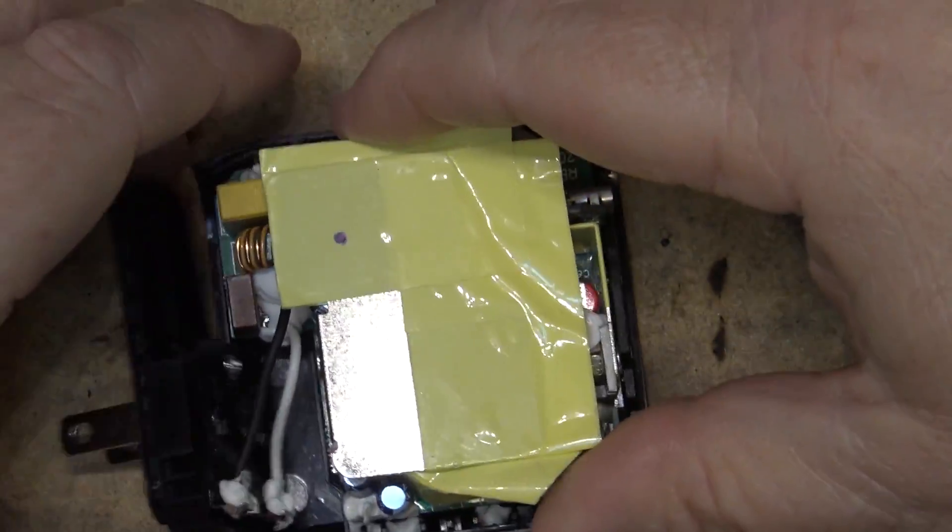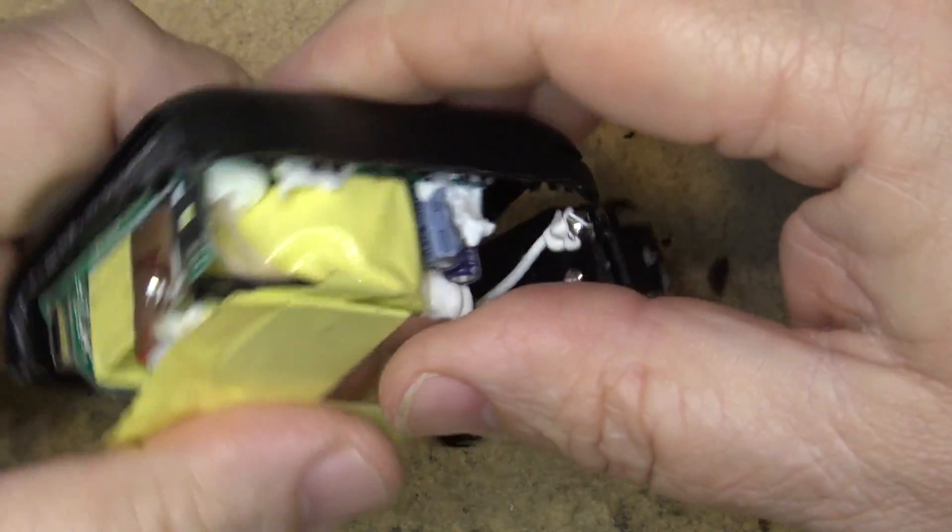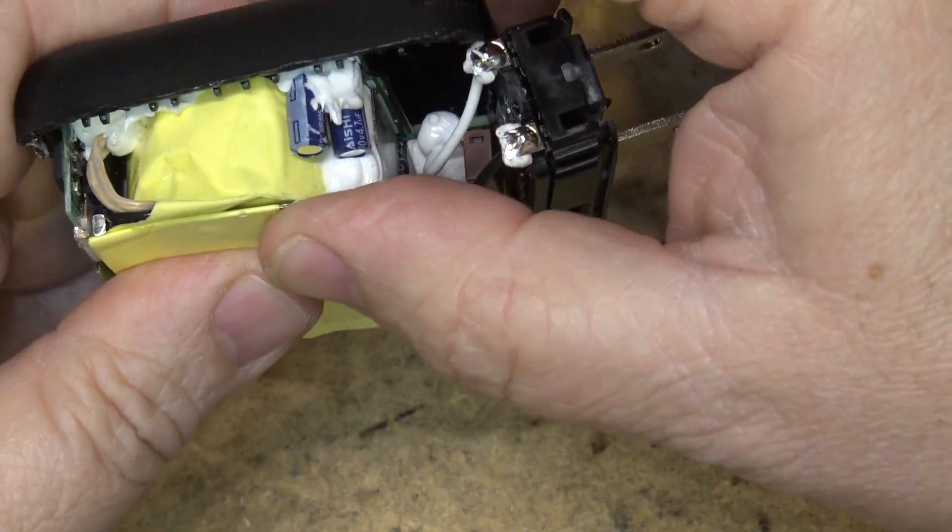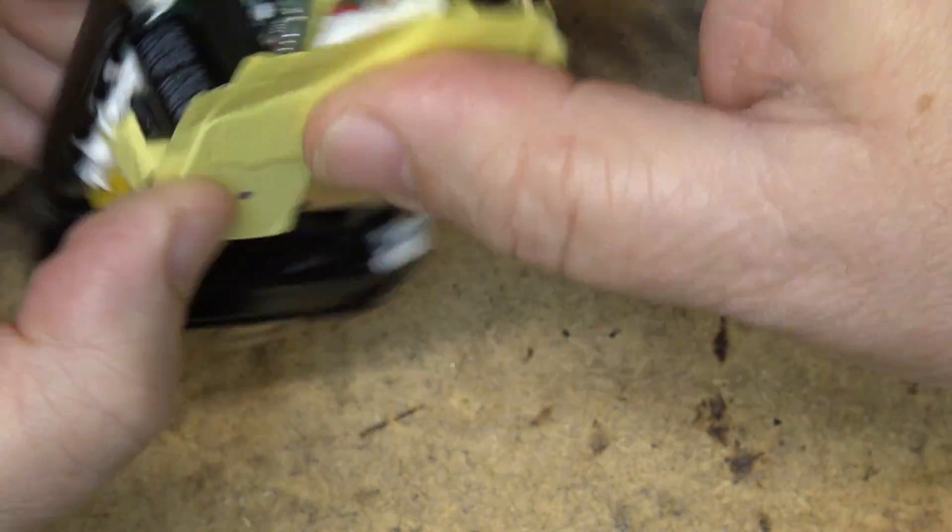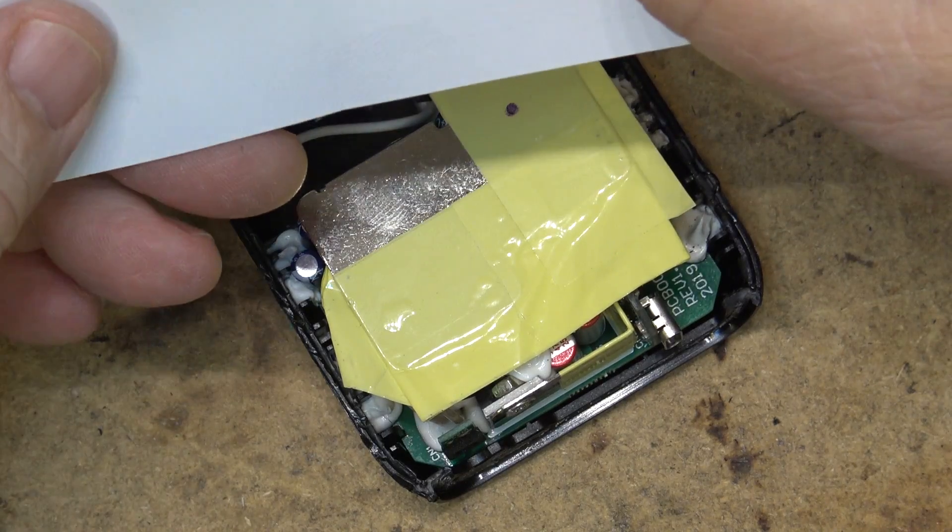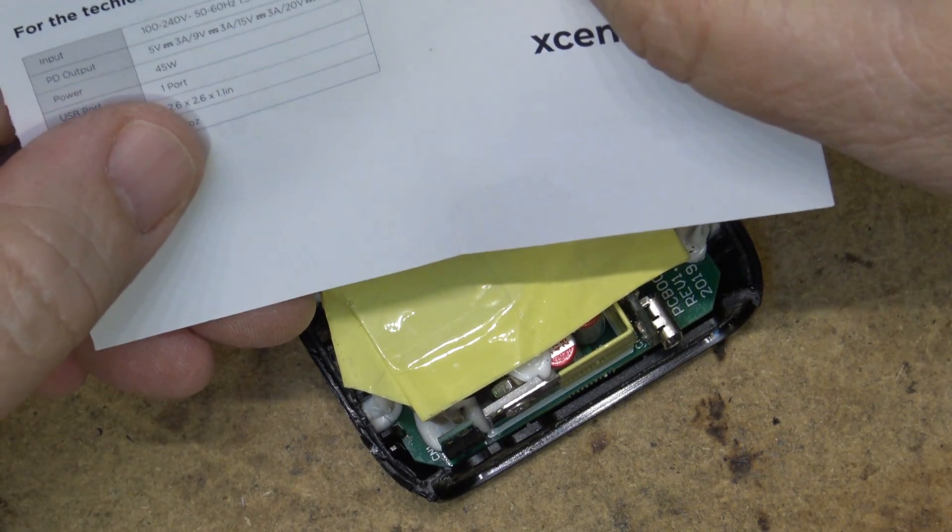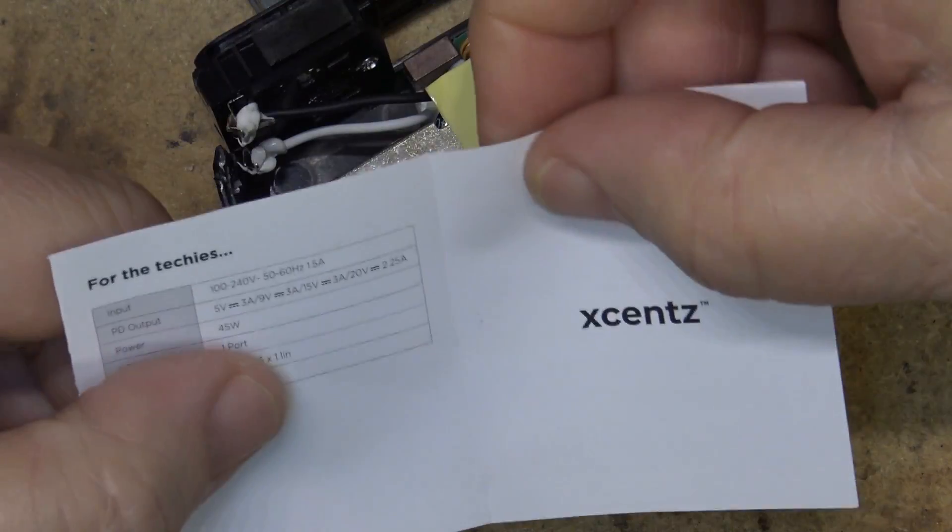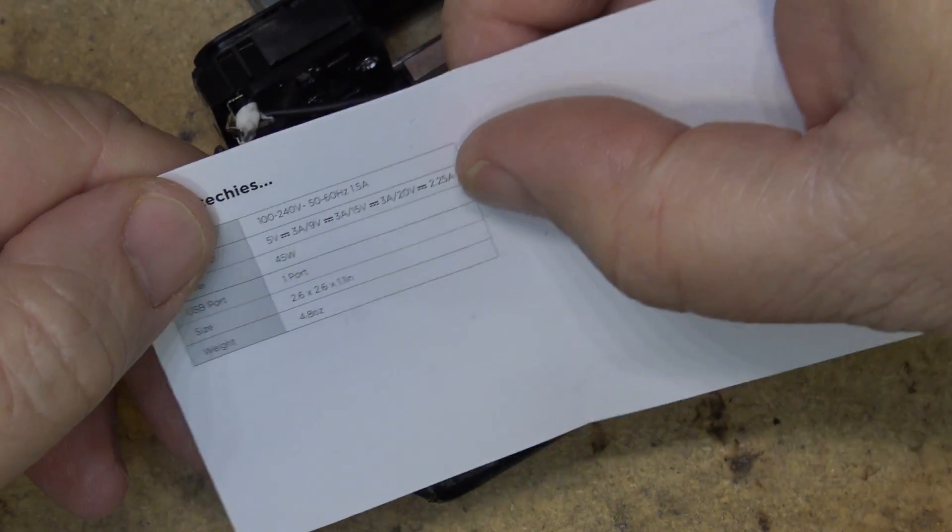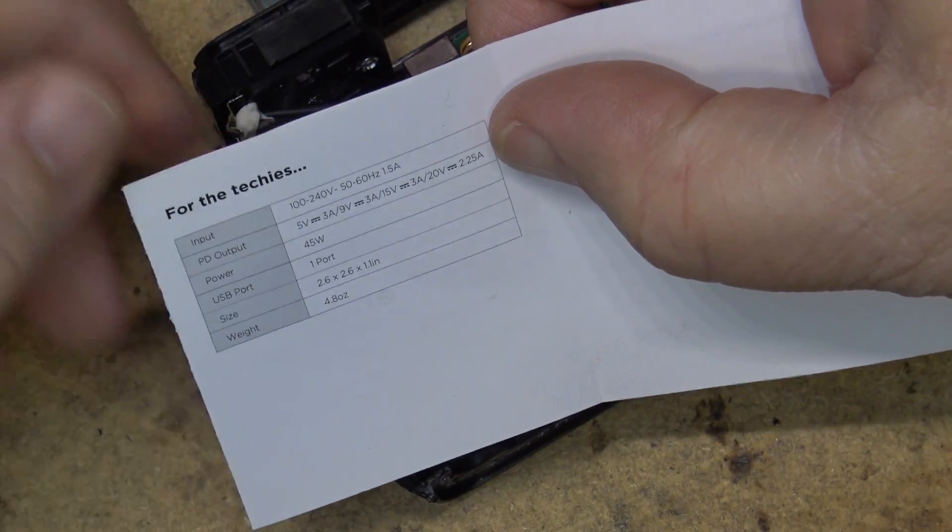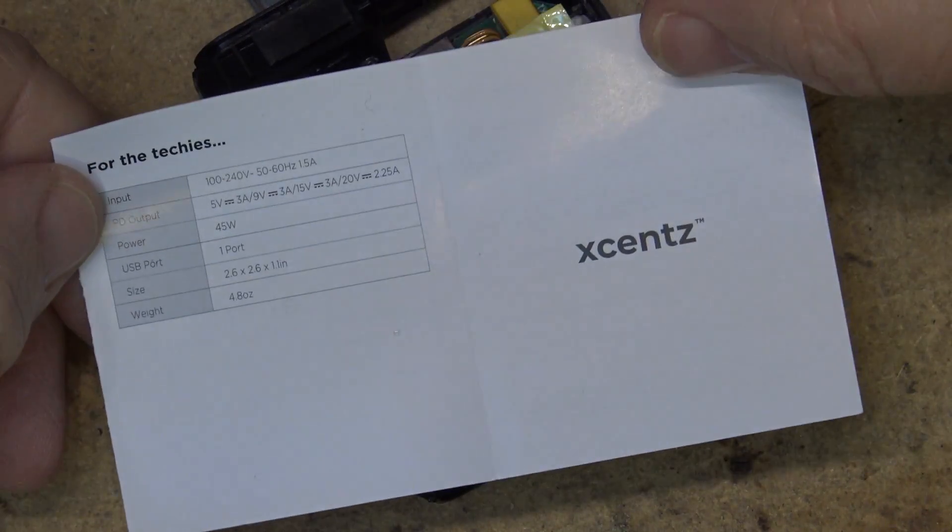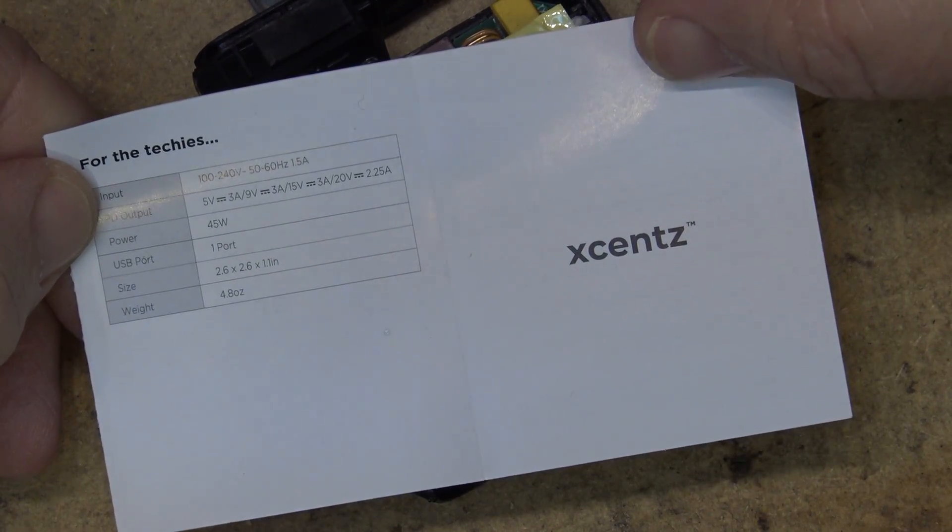I'm looking at this thinking the construction on this is very good. Now it's just a matter of putting this thing back together, gluing it back together, and we'll wrap this one up. Link to this little adapter is in the description. It's a 3-amp output at 5 volts, 3 amps at 9 volts, 3 amps at 15 volts, and 2.25 amps at 20 volts - a 45-watt charger from Xcent. Thanks for watching. We'll catch you in the next one real soon.